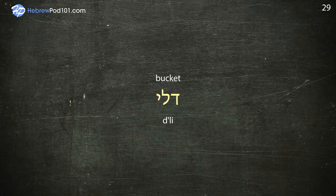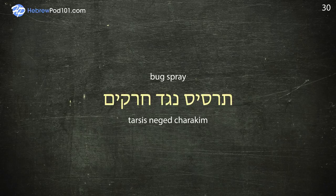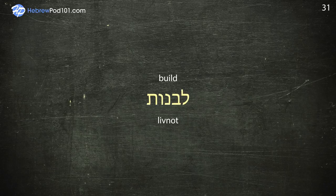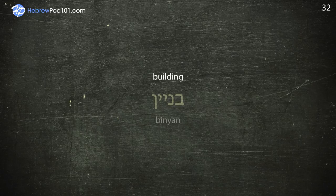Bug spray — Tarsis Neged Charakim. Build — Livnot. Building — Binyan.